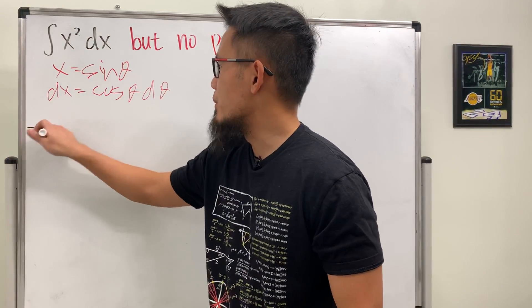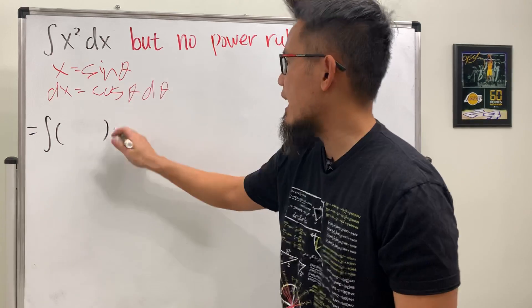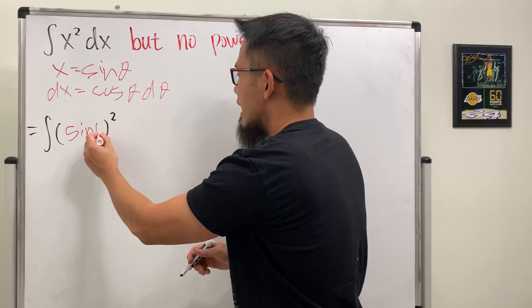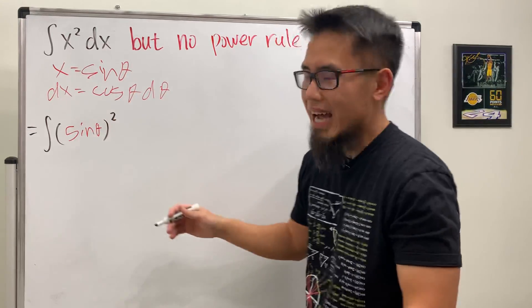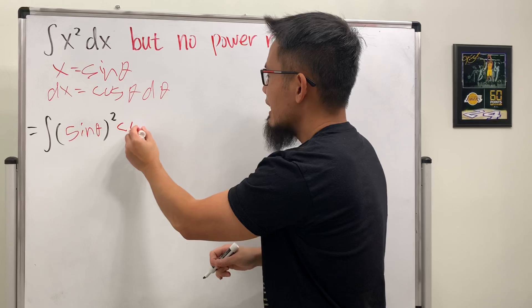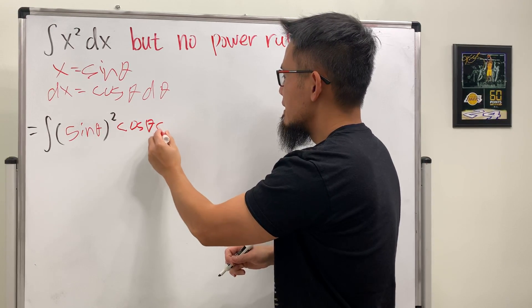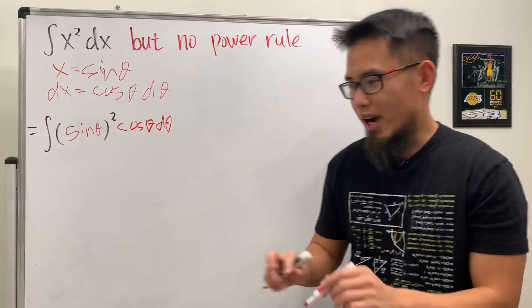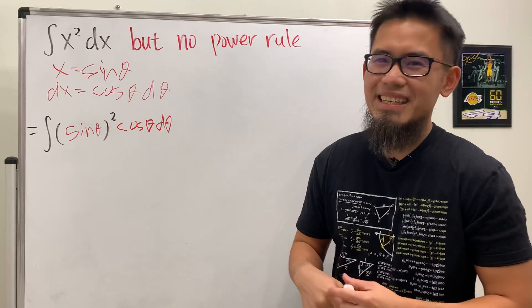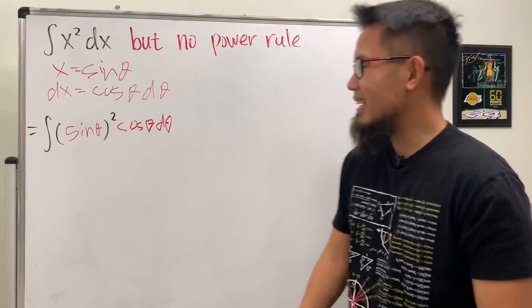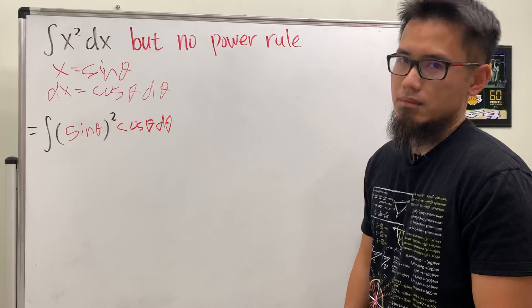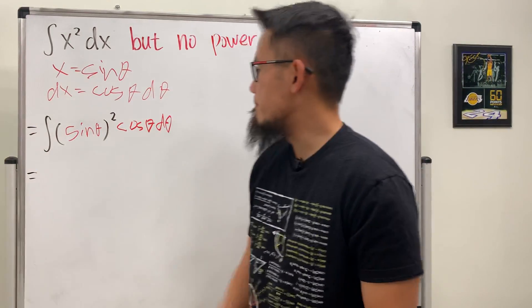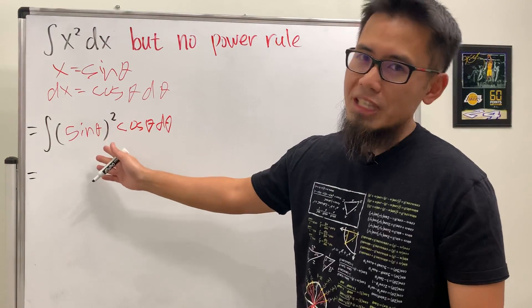And then maybe this will be really hard to watch, mainly for entertainment. So now this right here will be equal to the integral, and the x is equal to sine theta, and then we have that square. So of course we can write that down as sine theta square. And then the dx is equal to that, which is cosine theta.